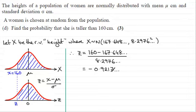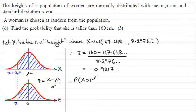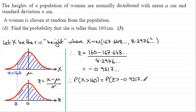Remember, this represents the number of standard deviations that the value of 160 is below the mean — it's just slightly less than one standard deviation below. So the probability that the height x is greater than 160 is exactly the same as the probability that Z is greater than minus 0.9217.